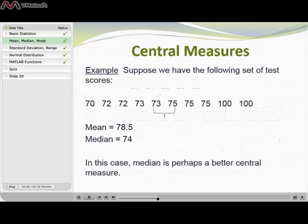In this case the median is perhaps a better central measure for this data because you can see that 8 out of the 10 test scores actually fall below the mean.